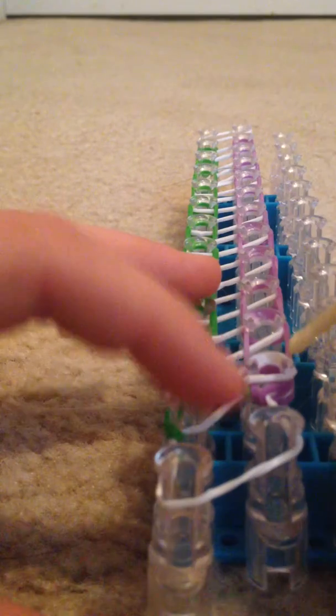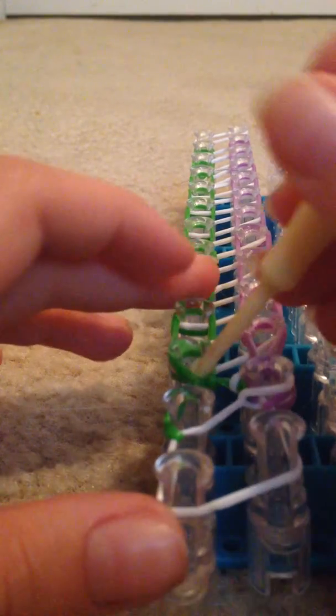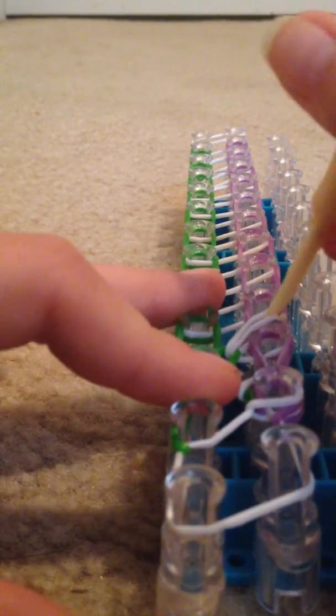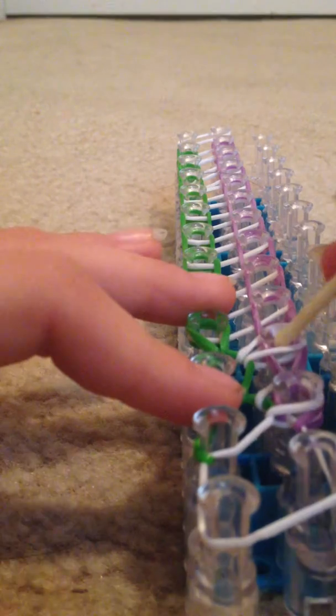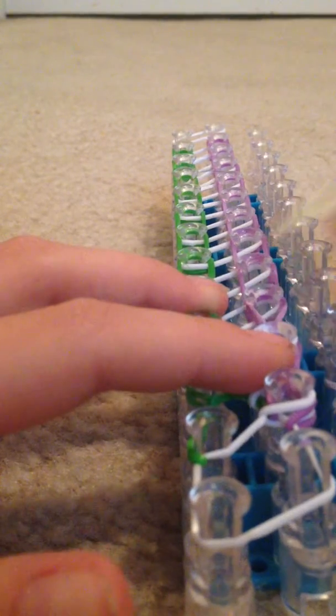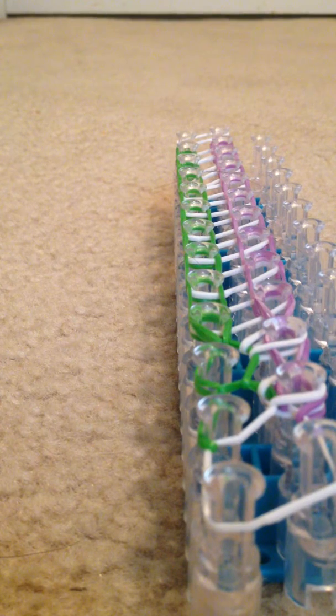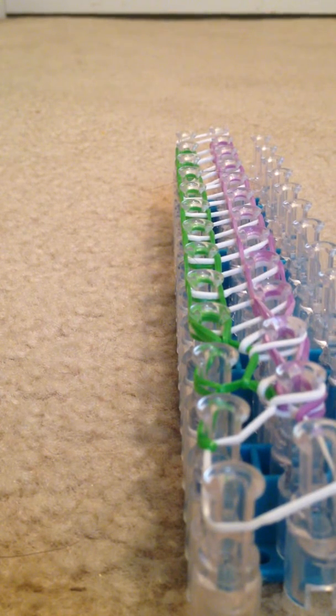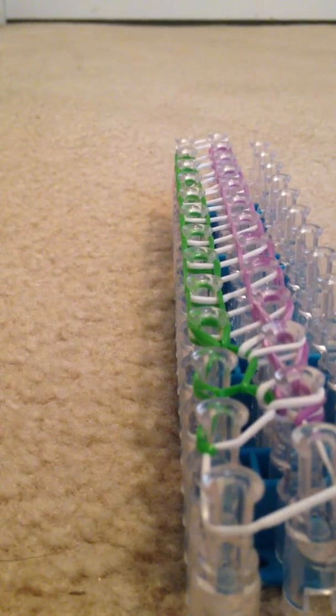Then you're going to put your hook down the green peg again, pull up the green rubber band, and go forward. Again, pull the white over to the purple, put your hook down the green, pull up the green and over, put your hook down in the purple, come out, and then it will come over. Okay, so keep on repeating this step until the end.